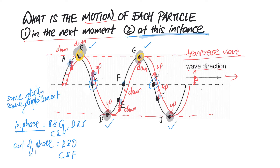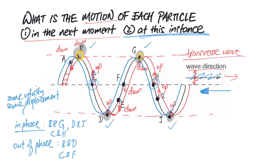Before we end the video, let's see whether you've learned the technique correctly. Assume this wave is moving to the left instead of to the right. All points on the wave will be shifted to the left by the same amount, so first I draw the new position of the wave in blue. For A, it will be going up.